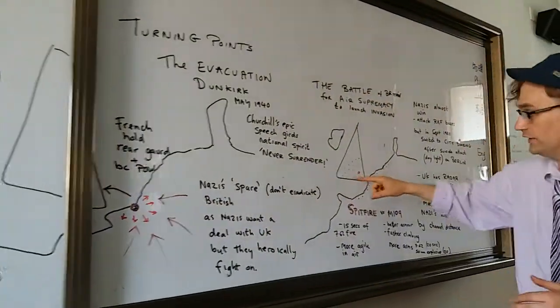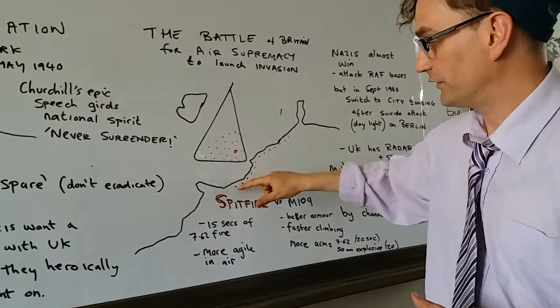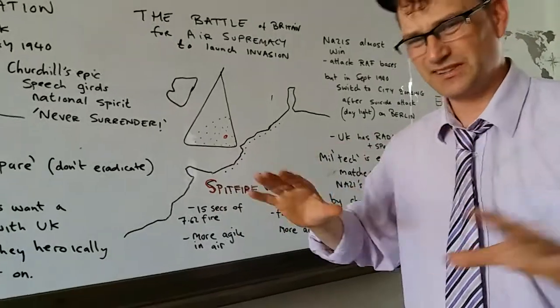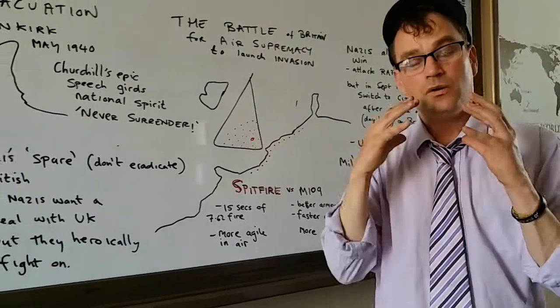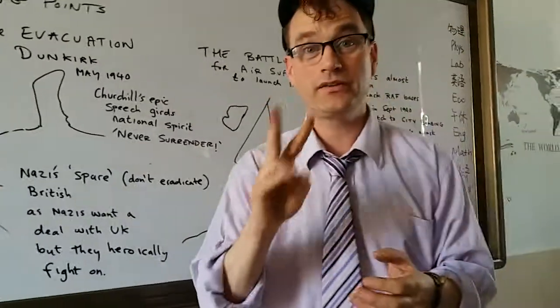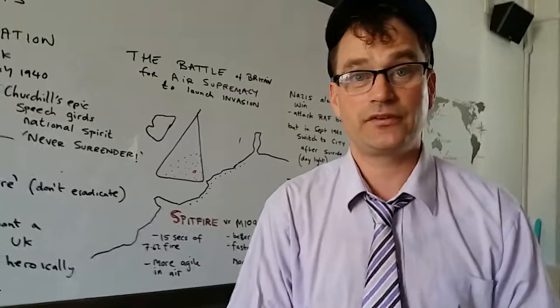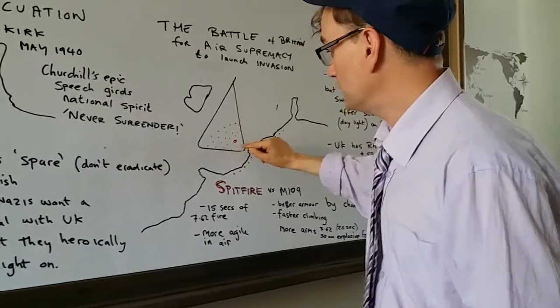The Germans are trying to get air supremacy over the south of England here. These are the RAF bases. And this is the Nazi Air Force, called the Luftwaffe. And they're attacking them. Why didn't they win? Well, they're very close to winning.